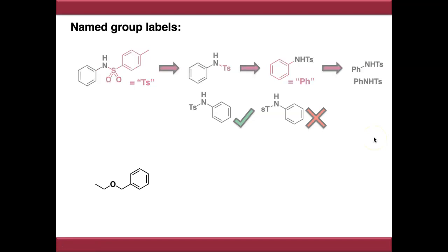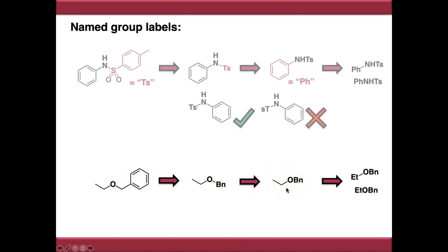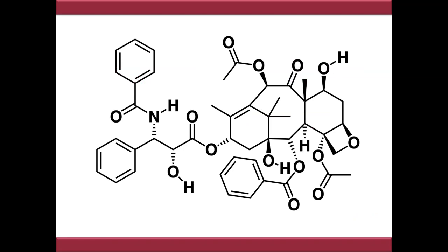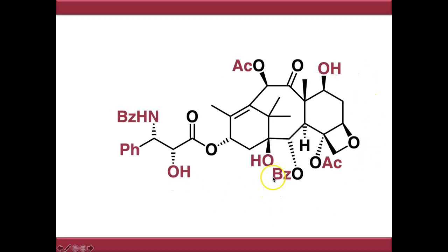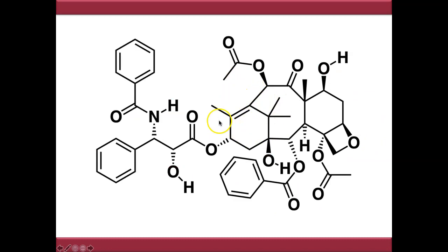For example, a benzyl group can be abbreviated as Bn — a benzene ring and a CH2 — and an ethyl group abbreviates as Et. If you flip a structure with named group labels, don't flip the letters: it's still Bn, not NB, and still Et, not TE. These group abbreviation labels come in really handy for complex molecules like paclitaxel — abbreviating some groups makes the chemical structure a lot simpler and clearer, especially when focusing on a particular part of the structure.